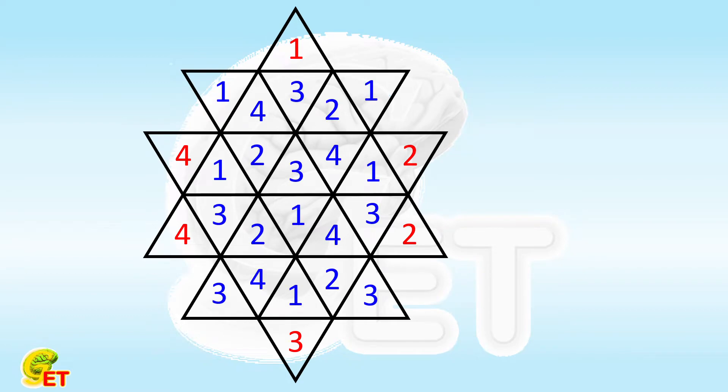Today we will discuss the following two questions. First, is the answer unique? Second, we change the requirement. Now, instead of requiring that the numbers in the 4 small triangles that make up the large triangle cannot be duplicated,